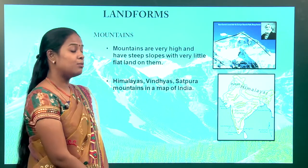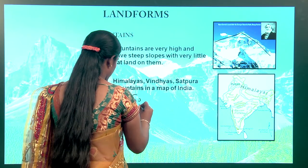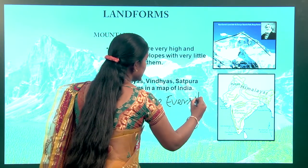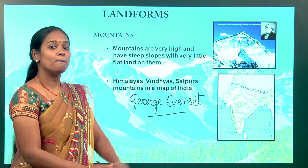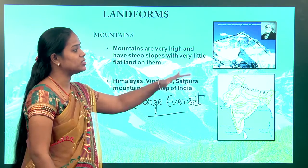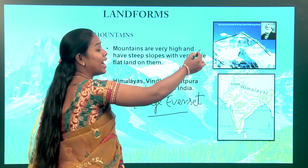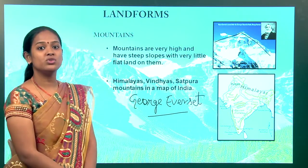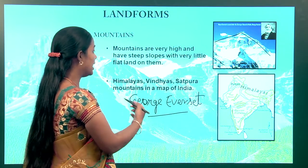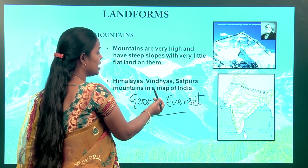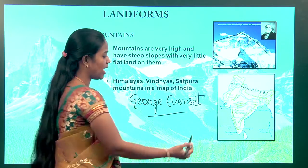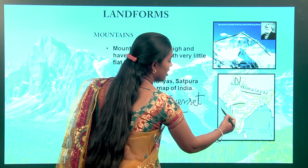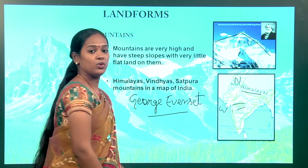Mount Everest is the highest peak in the world. This mountain is named after Sir George Everest, because he was the first person to measure the height of the mountain. That is the reason it is called Mount Everest. You can also see mountains in India — the Himalayas to the north, the Vindhya mountains, and the Sahyadri mountains, all present in India.